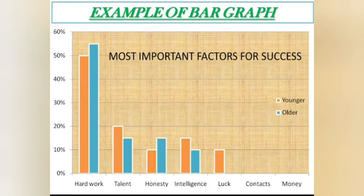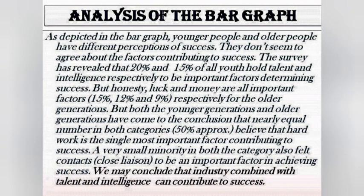Now, friends, let's look at the basis of success — the most important factors for success. As depicted in the bar graph, younger people and older people have different perceptions of success. They don't seem to agree about the factors contributing to success. The survey has revealed that 20% and 15% of youth hold talent and intelligence respectively to be important factors determining success.